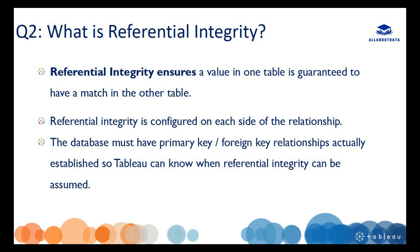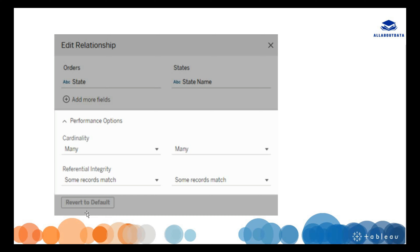Our next question is: what is referential integrity? Referential integrity ensures a value in table one is guaranteed to have a match in another table. Referential integrity is configured on each side of a relationship or join. To enable referential integrity, the database must have a primary key and foreign key relationship established between them so that Tableau can know when referential integrity can be assumed.